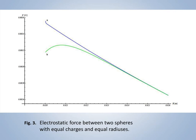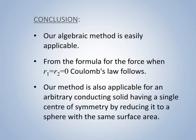As a conclusion, firstly, our method is easily applicable. Many of the results obtained by other researchers can be summarized by it. Secondly, Coulomb's Law follows from formula 10 when R1 equals R2 equals 0.